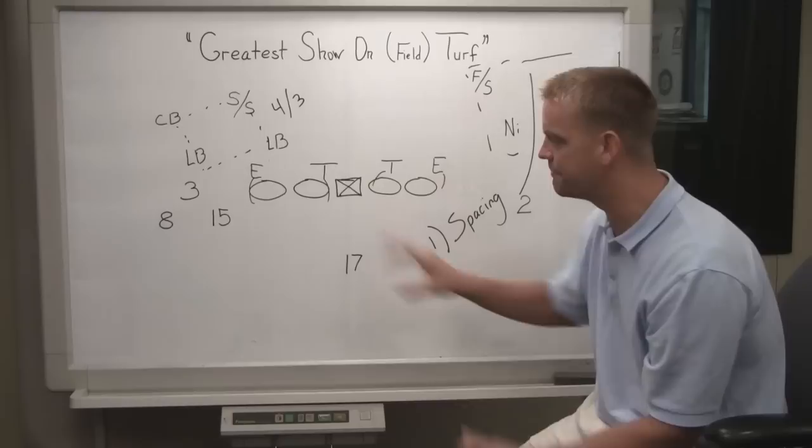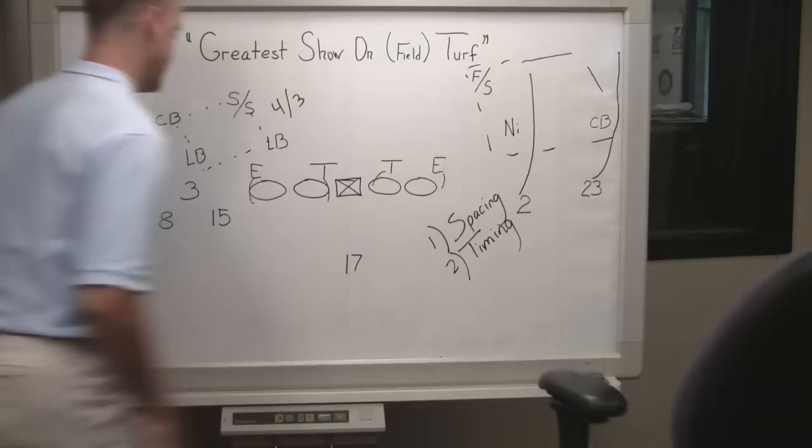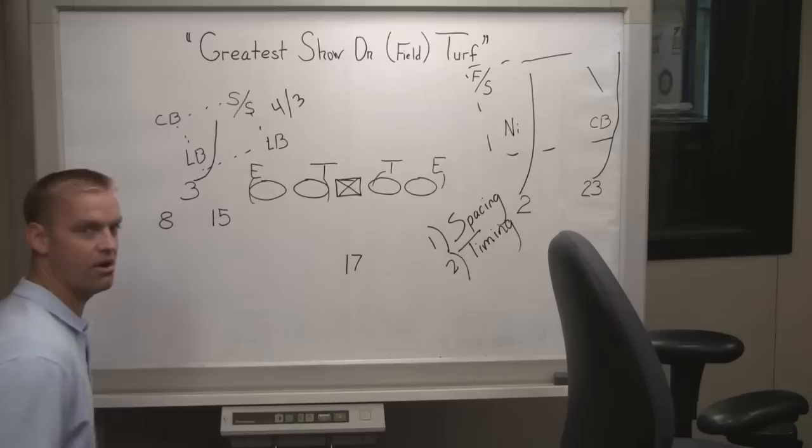Secondly, and this is most important, is the timing with this play. So what the Huskies do, I'm trying to get out of the way on this concept, is you have James Johnson, and he releases first. And he's got to get off the ball. If he does not get off the ball, the play is dead.